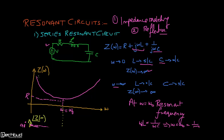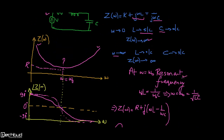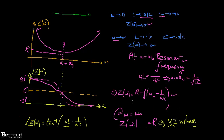From the Z(ω) vs. ω plot, we can see that at ω = 0 the impedance is very large, and at ω → ∞ it is also very large. In between, a condition exists where the impedance is minimum — that frequency is called the resonant frequency ω₀. Mathematically, this is defined as ω₀L = 1/(ω₀C). At this frequency, the reactive terms cancel each other, so Z(ω) reduces to just R.